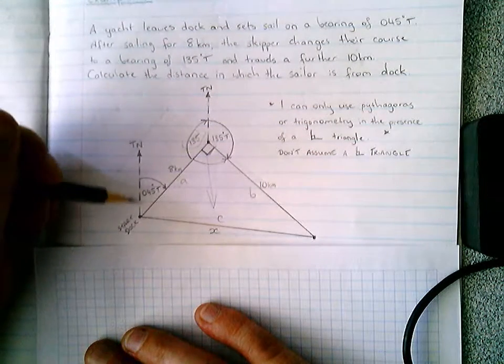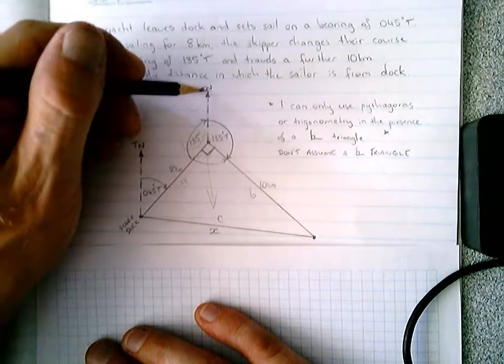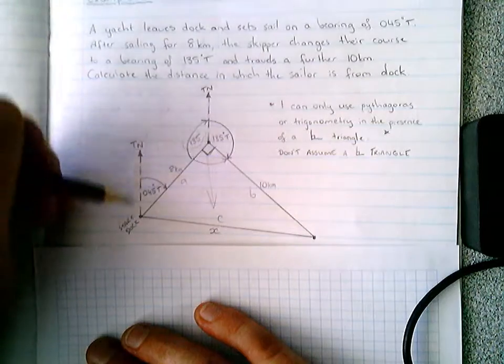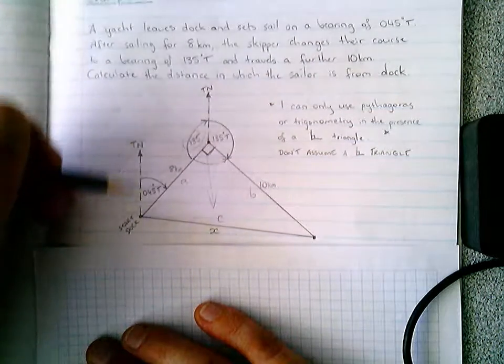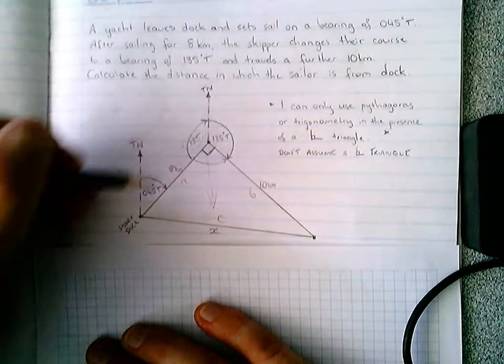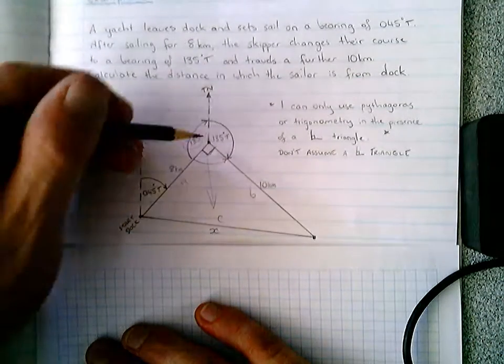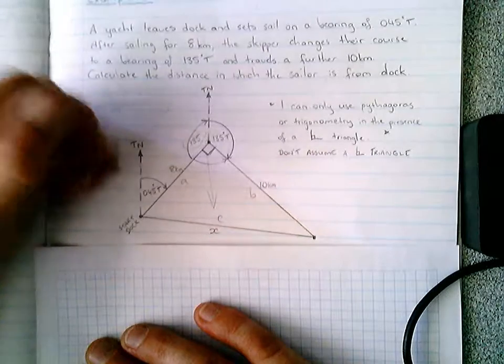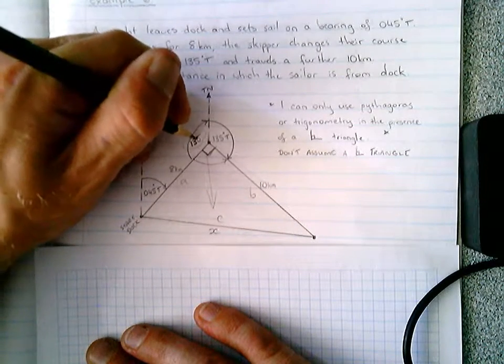And what you'll find is that this is 45 degrees here, and this is an unknown angle here. These two true north arrows run parallel, therefore we have a sum of two angles equating to 180 degrees, being this plus this must equal 180. Thus, 180 take 45 degrees gives us 135.